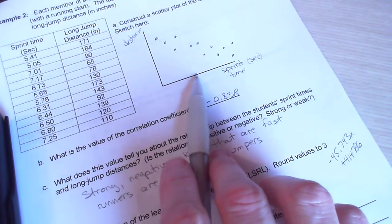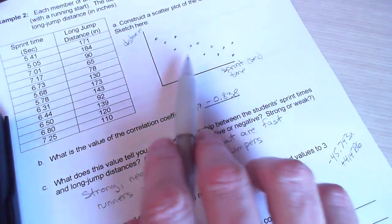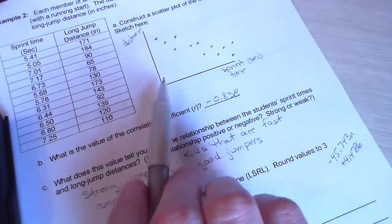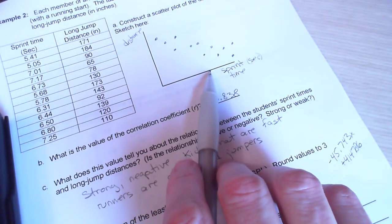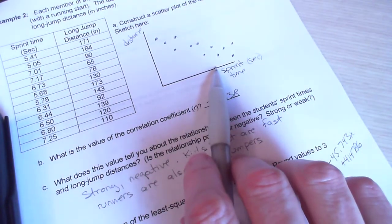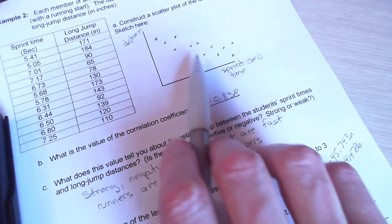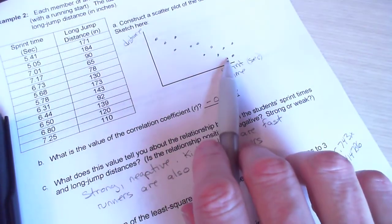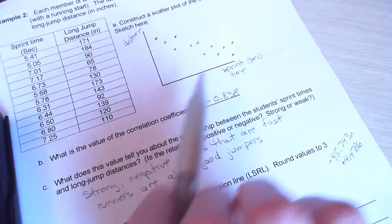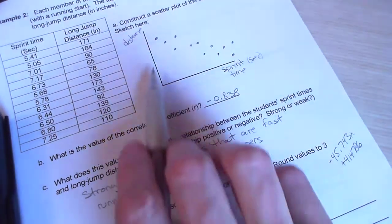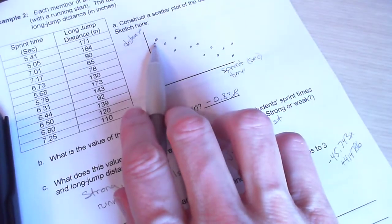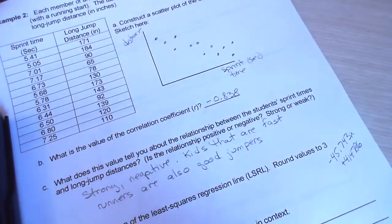And I would say they're fairly close together. And our value in the 0.8 range I would describe as strong. So I would say the relationship is strong, negative. So kids that are fast runners are also good jumpers. Because remember, as sprint time increases, that means they're slower runners. And their jump distance decreases. So they're not jumping as far. Up here where we have short sprint times, we have high jump distances.